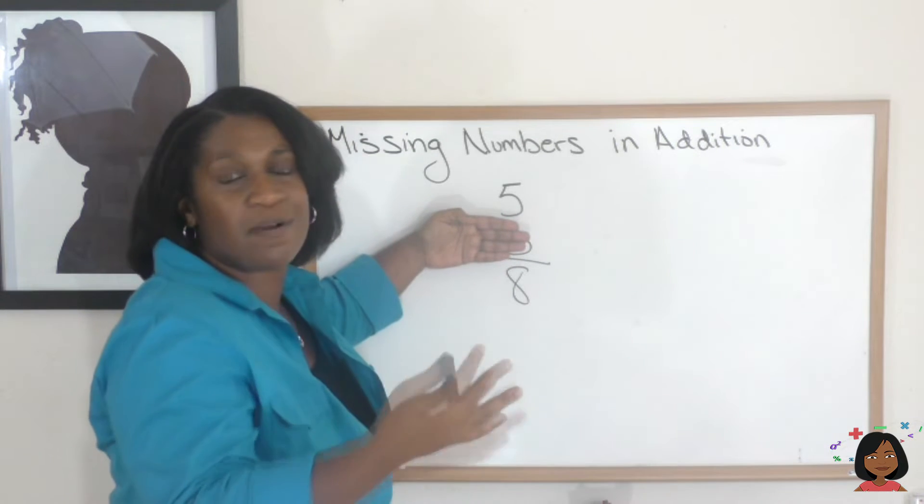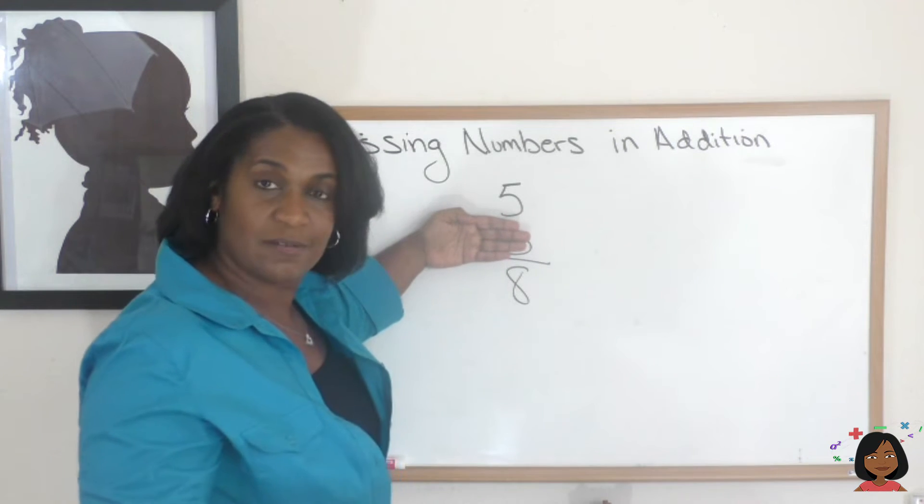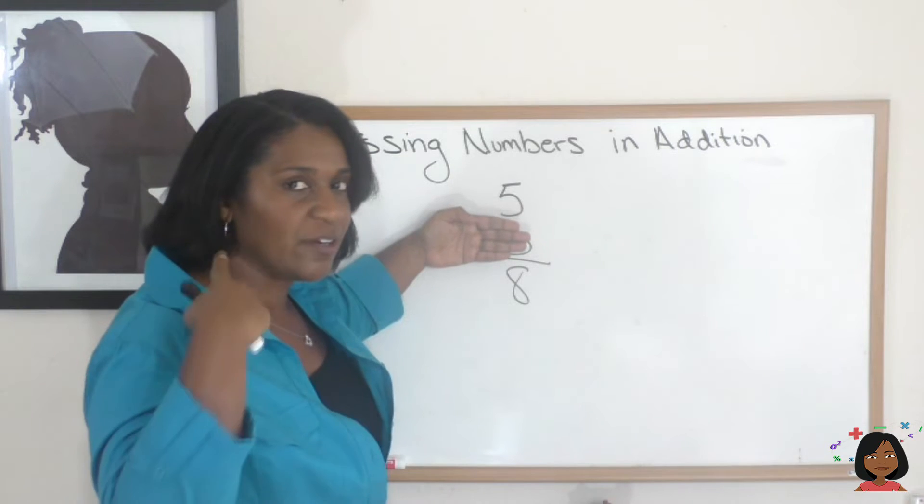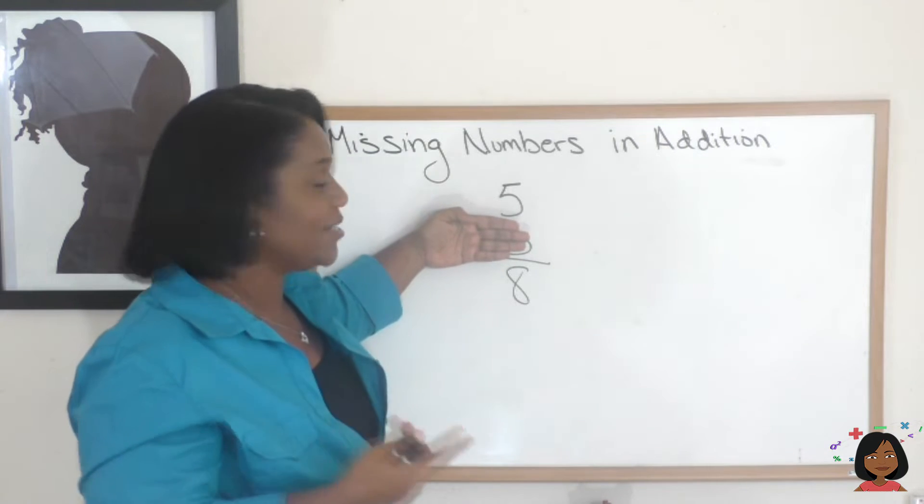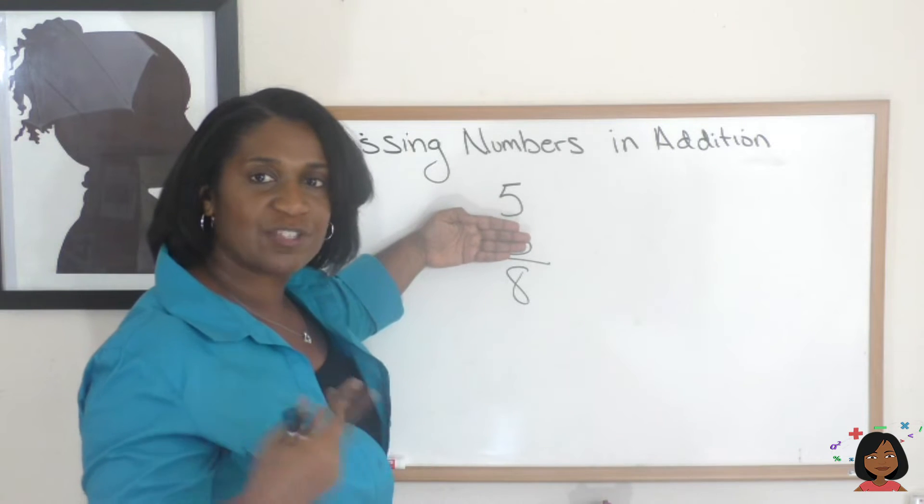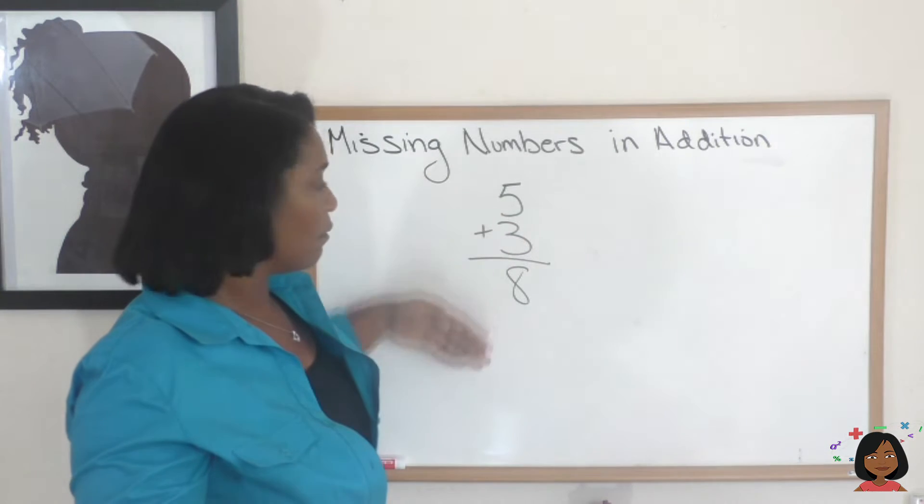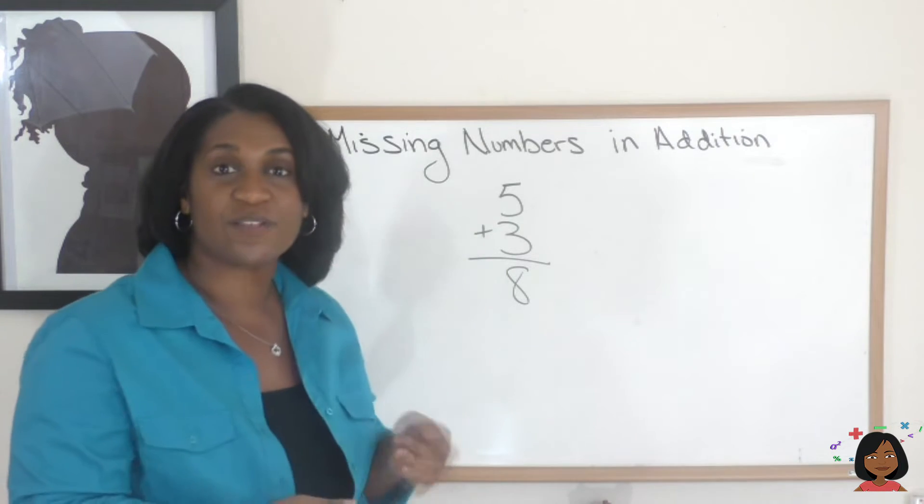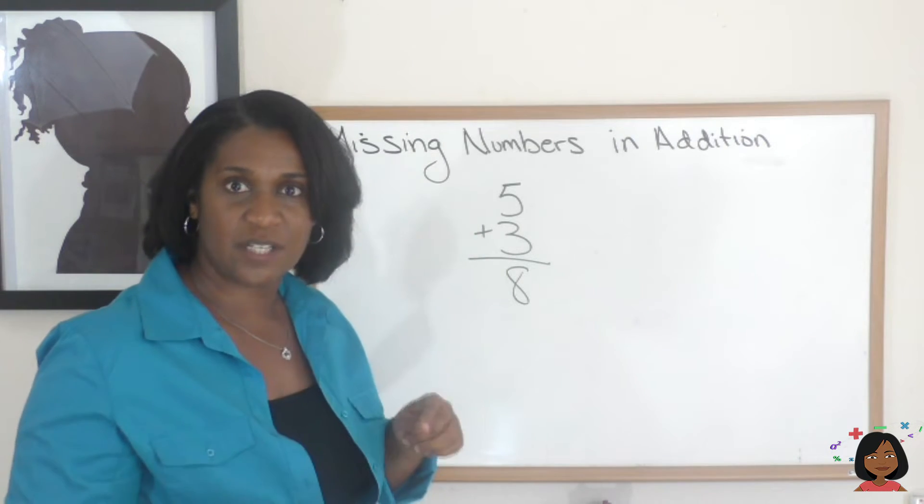5 plus some number equals 8. I can hear your brains churning. If I did 8 minus 5, that would give me the answer of 3. So we're going to use that to help us find missing numbers in addition.